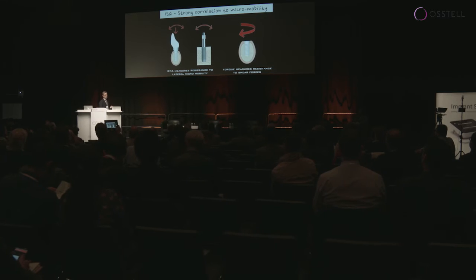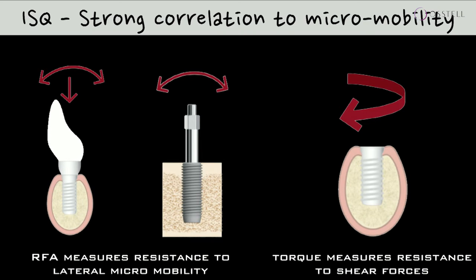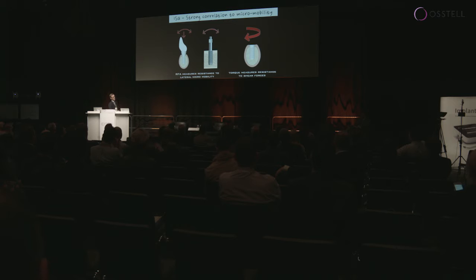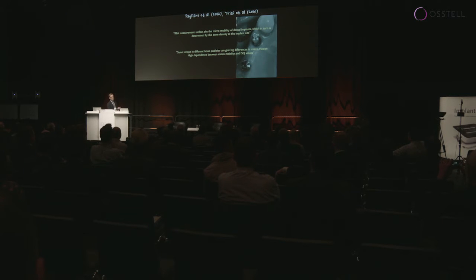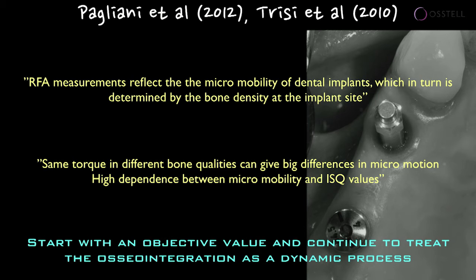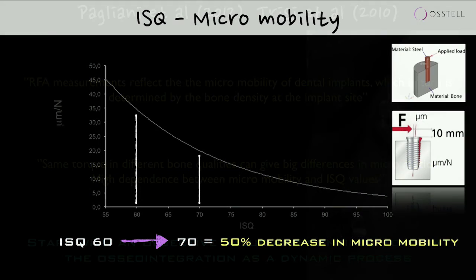What has been seen in recent research is a very strong correlation to micromobility. Comparing micromobility to torque — which is resistance to shear force — it's very difficult to repeat torque. Measuring osseointegration by trying to unscrew the implant is not something you do. What we're measuring is lateral micromobility, and further studies emphasize the same thing — considering osseointegration as a dynamic biological process. We can take several values and compare them over time, instead of just focusing on a single torque value.